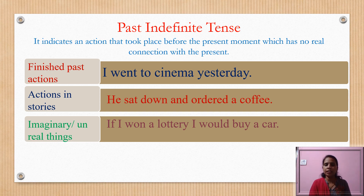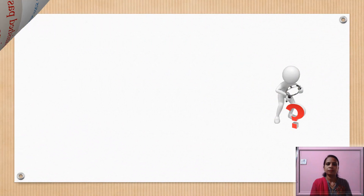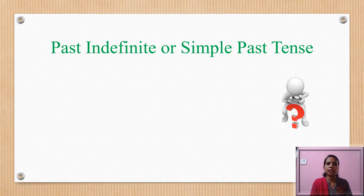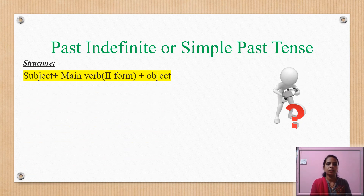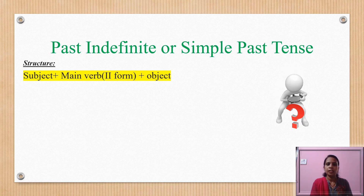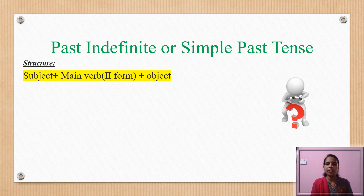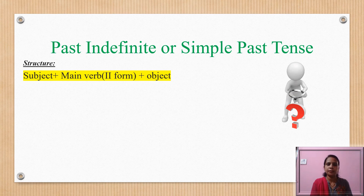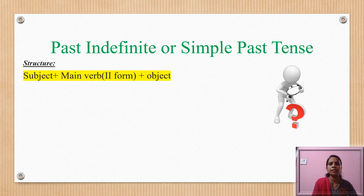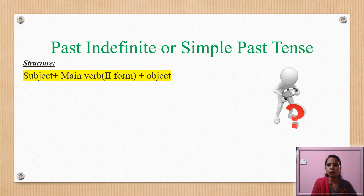Now, the structure of past indefinite or simple past tense: subject, then the main verb in second form, then the object. It is easier to learn the past tenses in comparison with their present tense equivalents, since there is much similarity between simple past and simple present tense. The main difference is that in simple past tense we use the main verb in second form, whereas in simple present tense the main verb is in first form. This is the only tense among all twelve tenses where the main verb is used in second form.